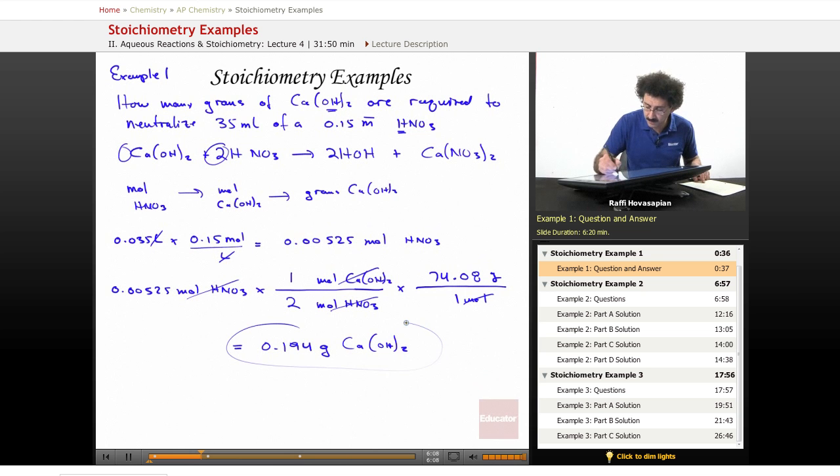So that's it. So if I have 35 milliliters of a 0.15 molar nitric acid solution, I need to drop in 0.194 grams of calcium hydroxide to completely neutralize the acid. In other words, what I'm adding here is base hydroxide to H+, the hydrogen ion, which is acid,